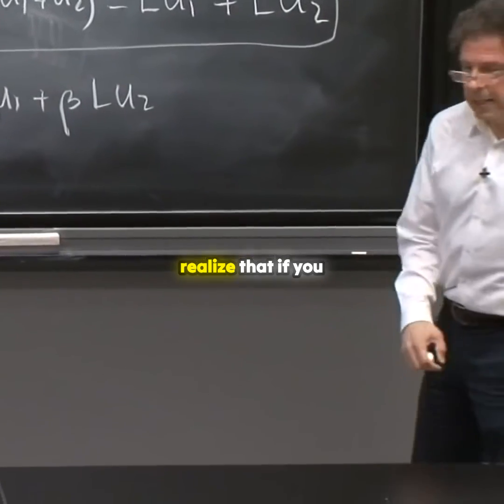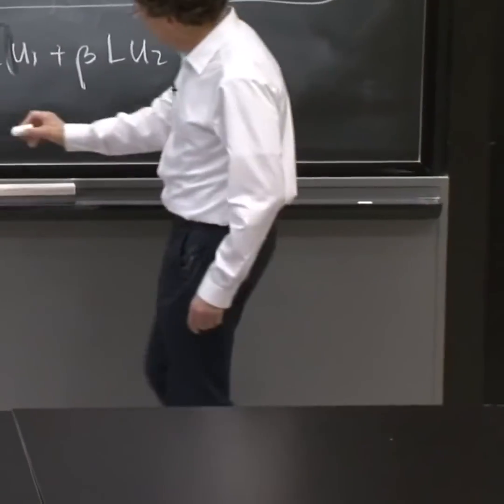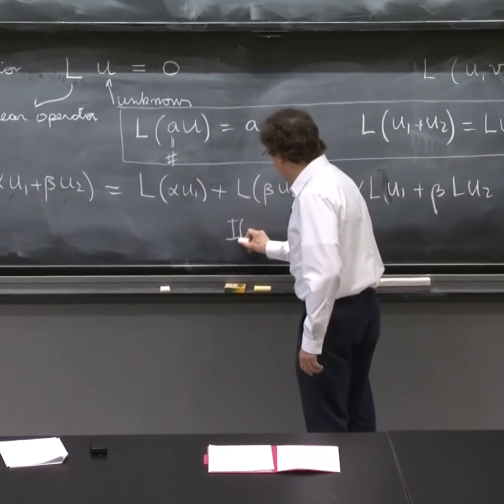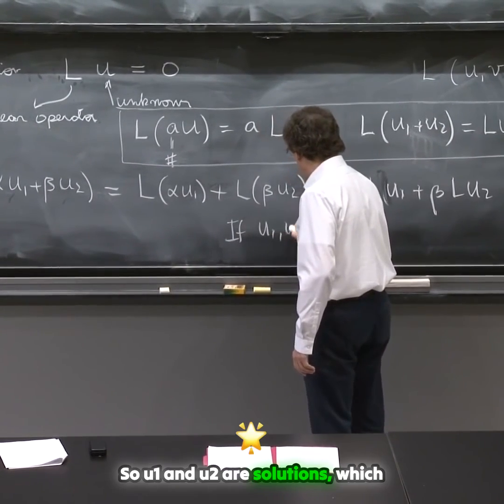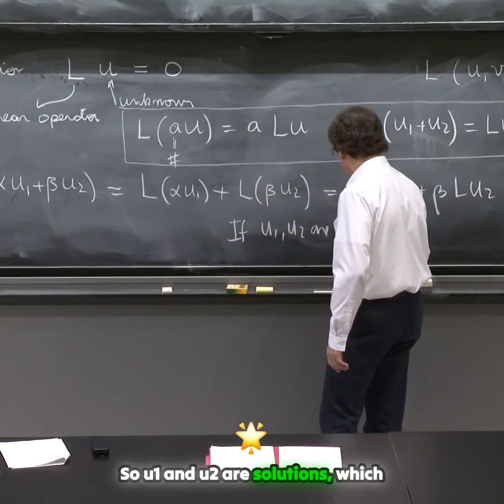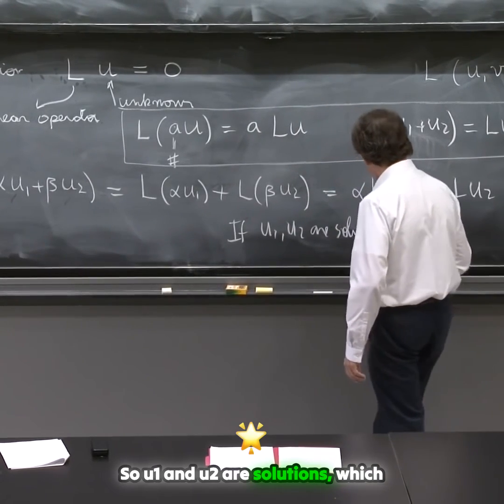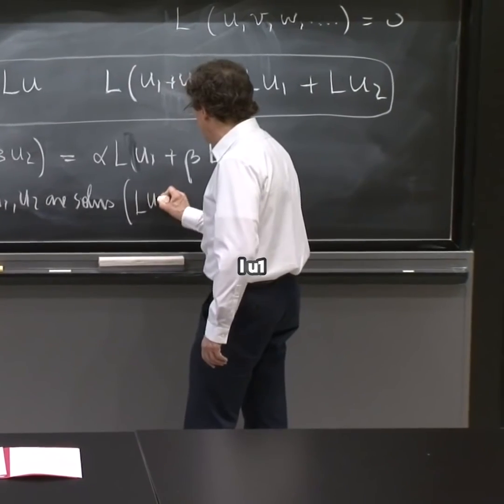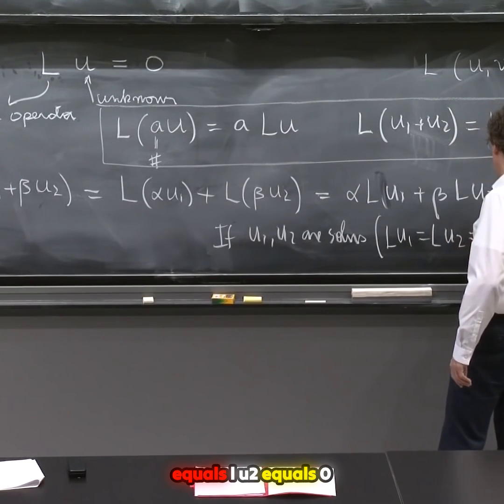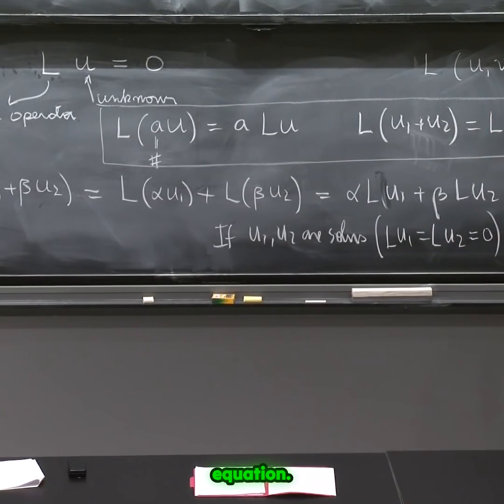And then you realize that if U1 and U2 are solutions, which means L(U1) equals L(U2) equals 0, if they solve the equation.